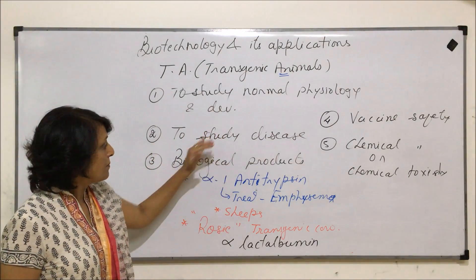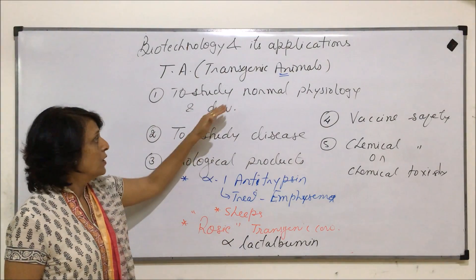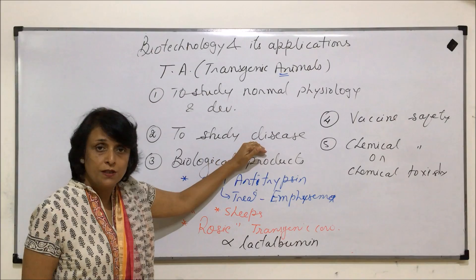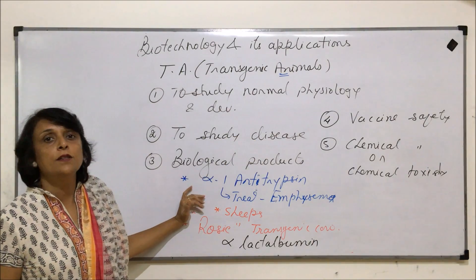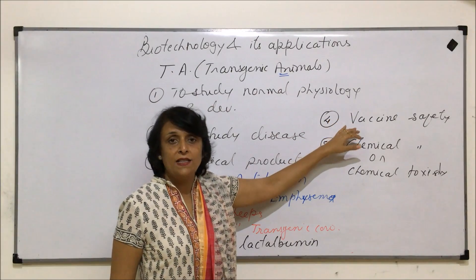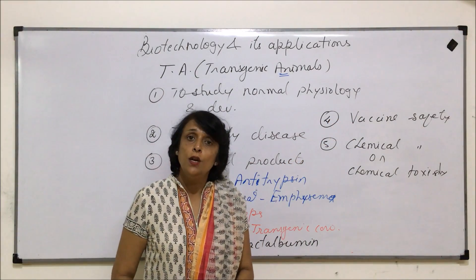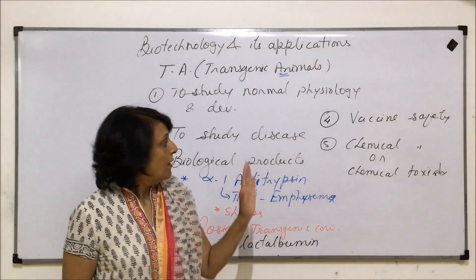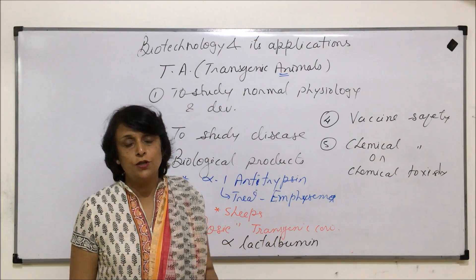So these are the main five applications where we use transgenic animals: to study normal physiology, to study diseases caused by various genes, to obtain certain biological products, and to test vaccines or chemicals before they can be used on human beings. With this, all applications of biotechnology are complete.